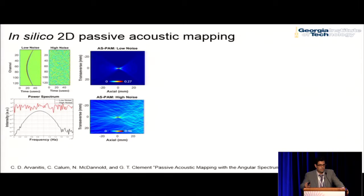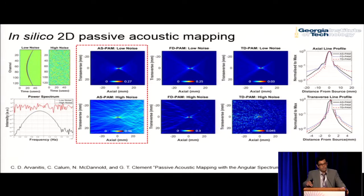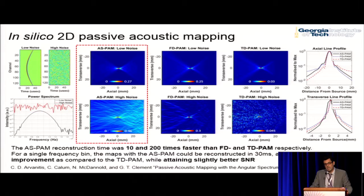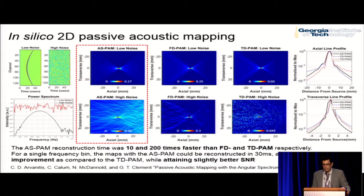This robustness is the advantage of constructive interference. Compared to the two other methods, the angular spectrum method provides the same resolution, the same localization accuracy, and at least equal signal-to-noise ratio — but it is 10 to 200 times faster than the time domain method.